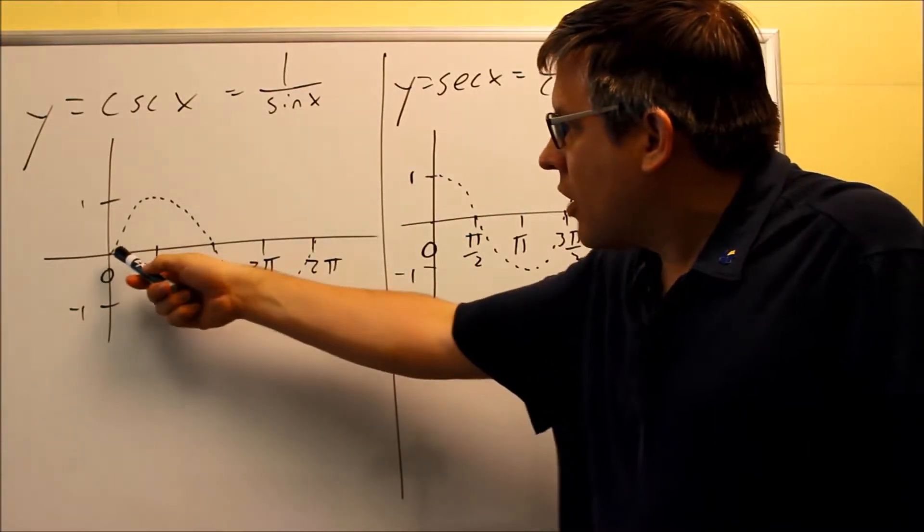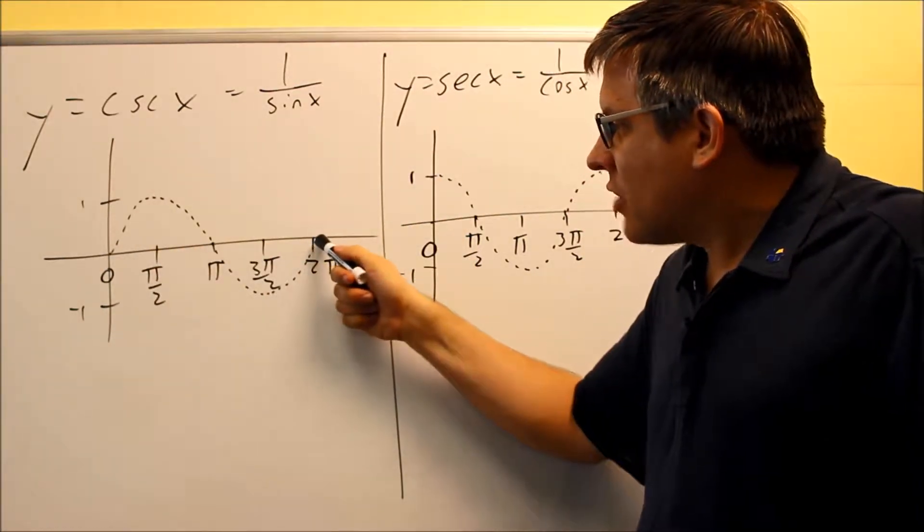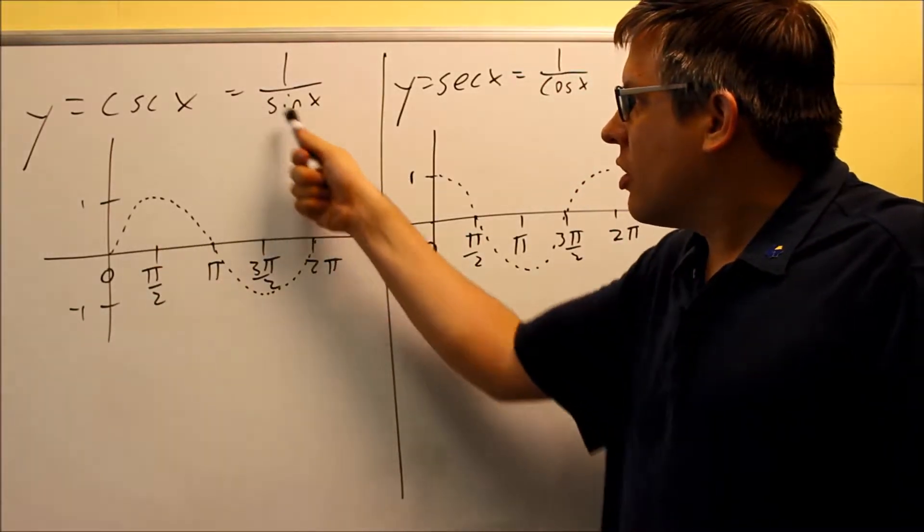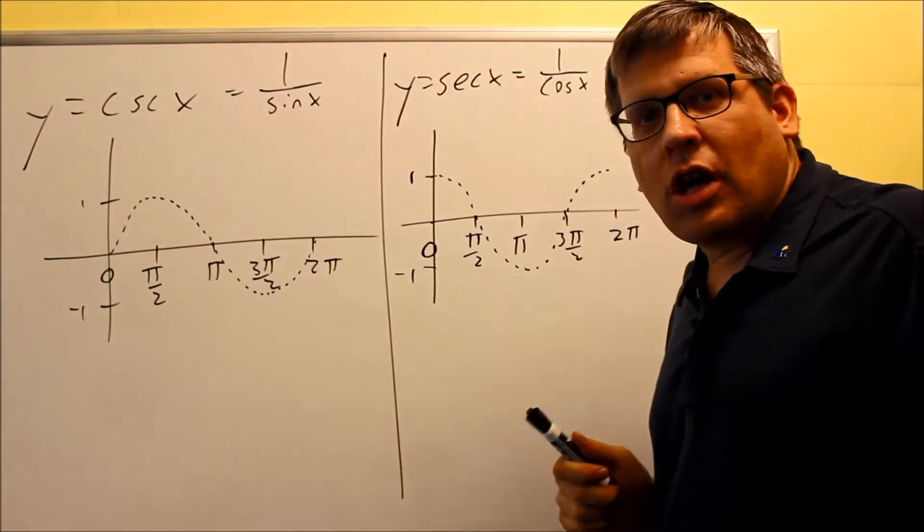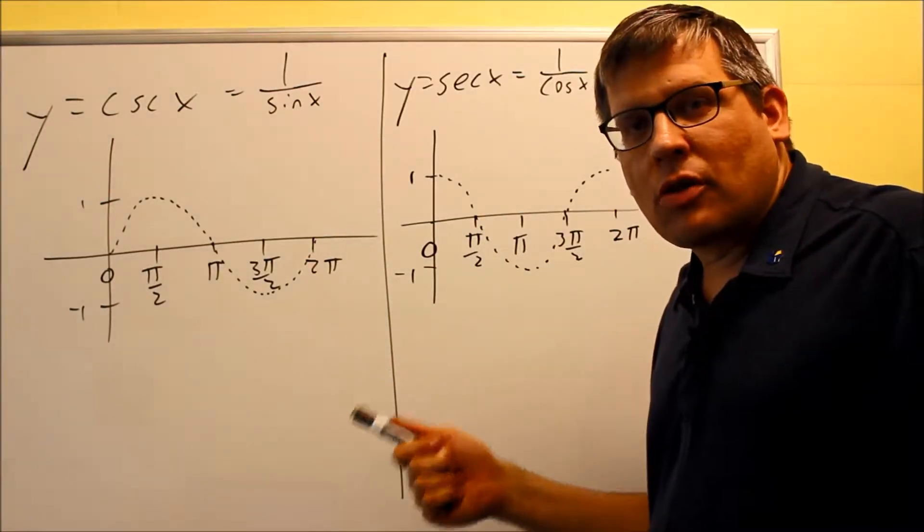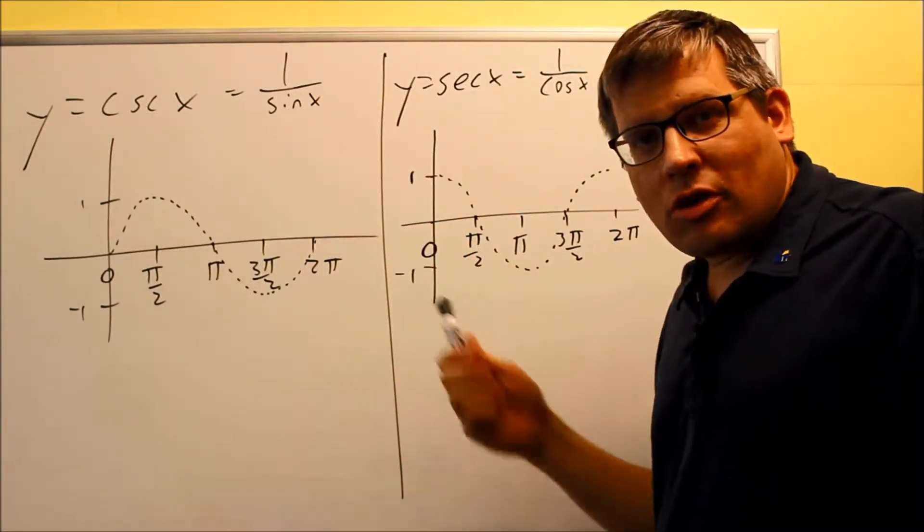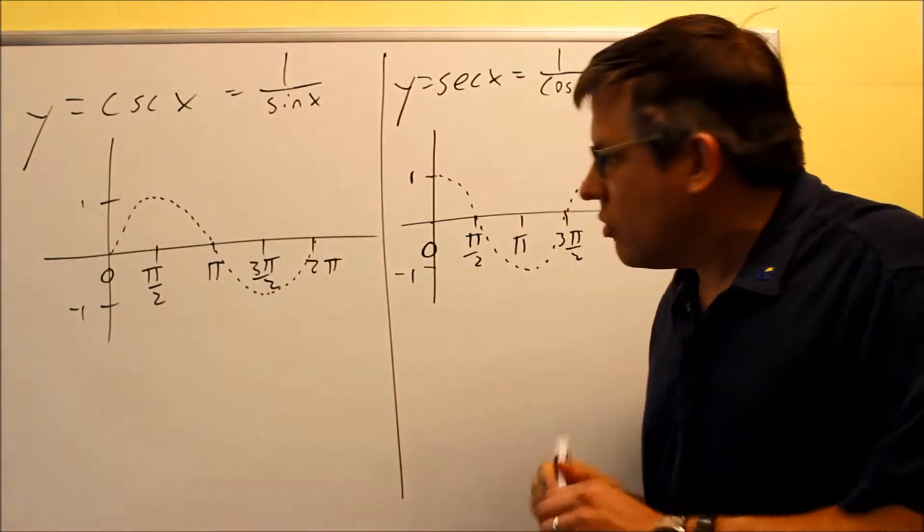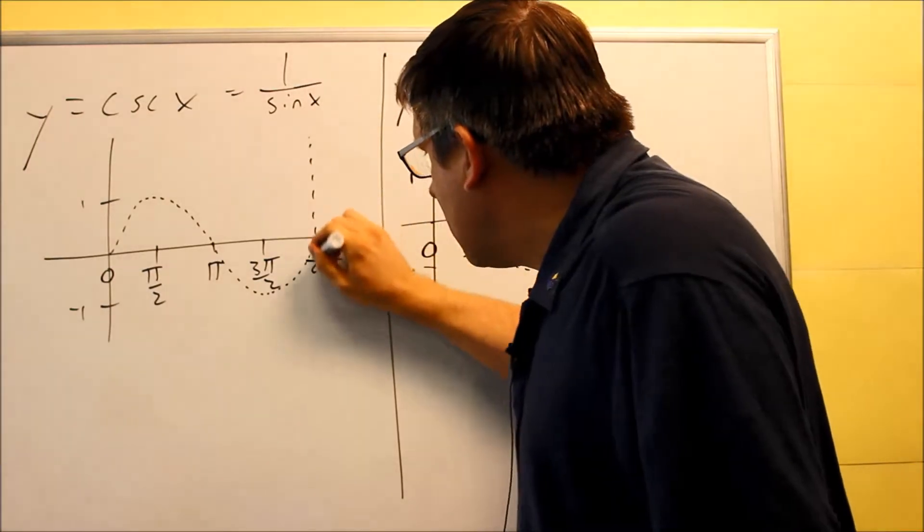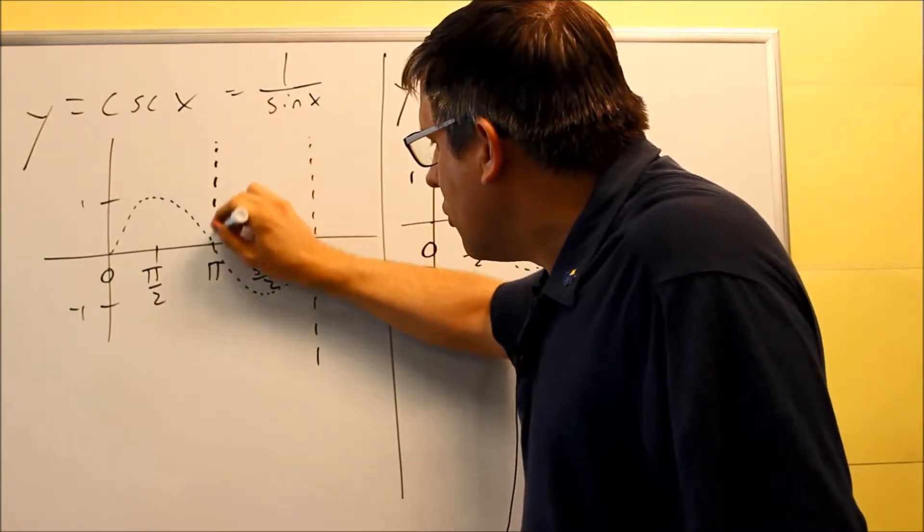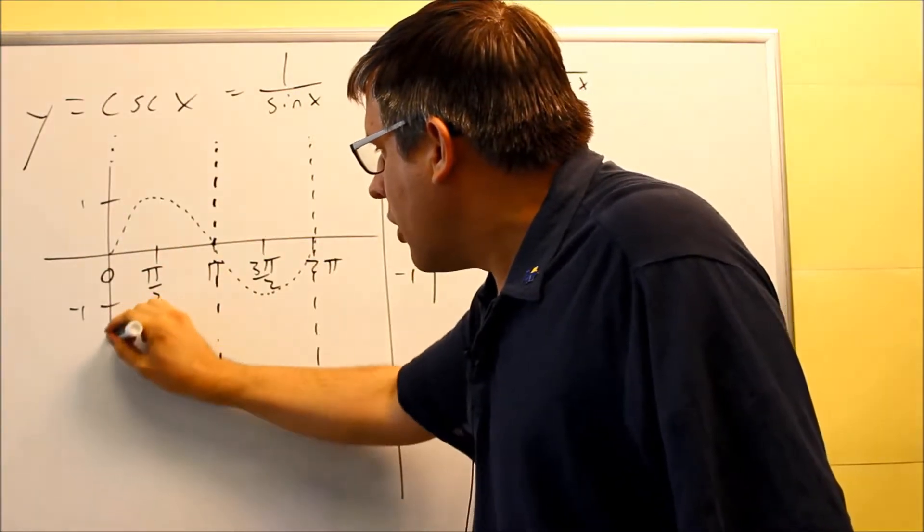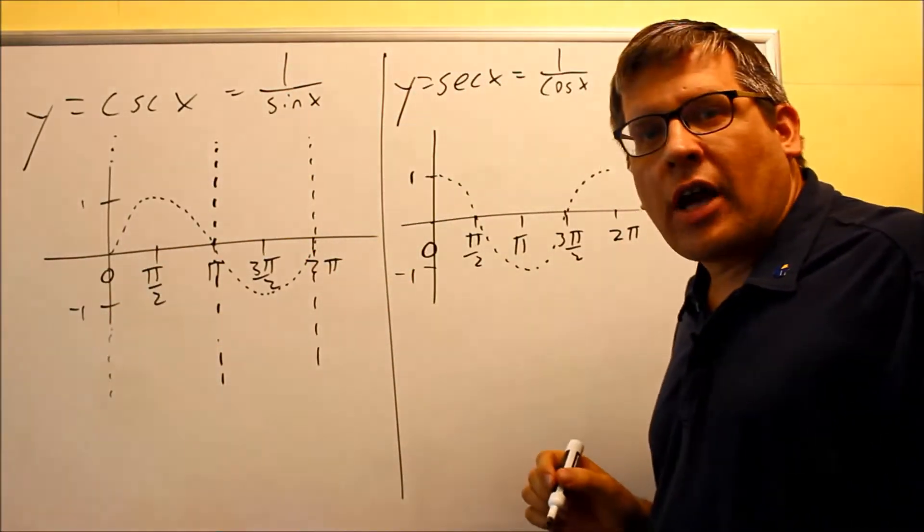So every place where the sine graph crosses the x-axis, that's where the sine value equals 0. If you put a 0 in this, then you have a vertical asymptote there because 1 divided by 0, you can't do that, it's undefined. So every place where the sine graph crosses the x-axis, we're going to put in a vertical line through. I'm going to draw these in, and this is going to get a dotted line as well. These would be the vertical asymptotes there.